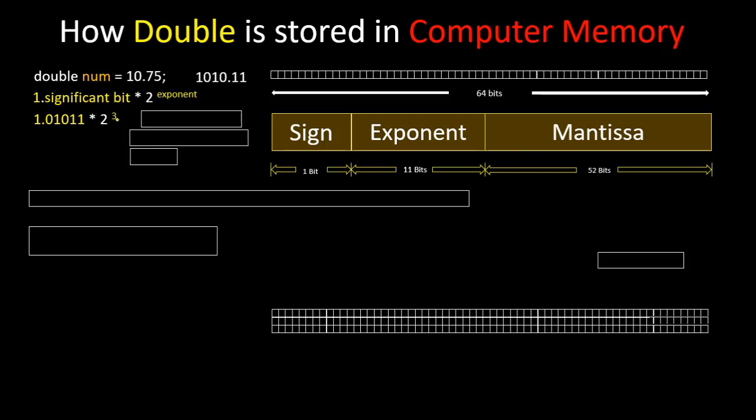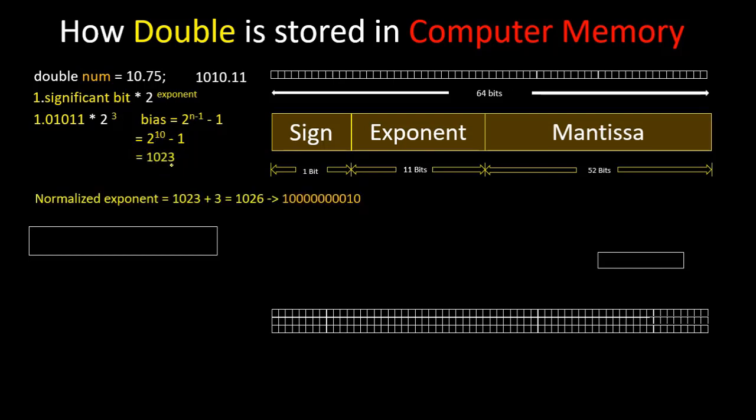The only difference between double and float is the bias value. And here is the formula for calculating bias. Here we use 11 bits for exponent, so n equals to 11. Then 11 minus 1 equals to 10. 2 to the power 10 minus 1 equals to 1023. And then we have to calculate normalized exponent and add this bias to the exponent. Then here we have 1023 plus 3 equals to 1026.